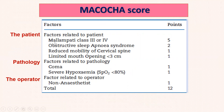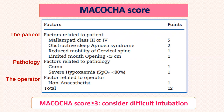For the patient factor: Mallampati score three or four scores five points; obstructive sleep apnea syndrome scores two points; reduced mobility of the cervical spine scores one point; and limited mouth opening less than three centimeters scores one point. For pathology: if the patient is in a coma, this limits examination and scores one point; if the patient is already hypoxemic, one point. For the operator factor: if the operator is a non-anesthetist or non-expert, one additional point. A MACOCHA score of three or more indicates anticipated difficult intubation.